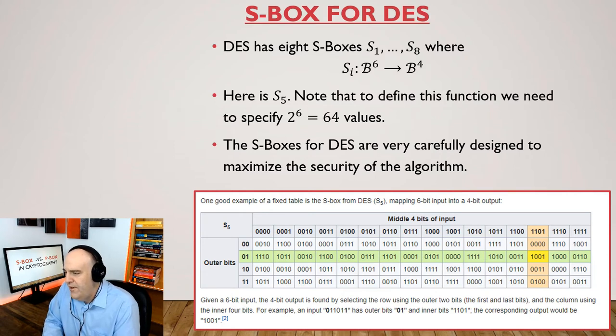So a non-trivial example for an S-Box would be we could take an S-Box for DES. In fact, DES has 8 S-Boxes, usually labeled S1 to S8. And these have 6 input bits and then 4 output bits. So here's the table for S5. Notice the number of values here. The number of output values is 2 to the power of 6, and that's 64. And these S-Boxes are actually very carefully designed to maximize the security of the algorithm.